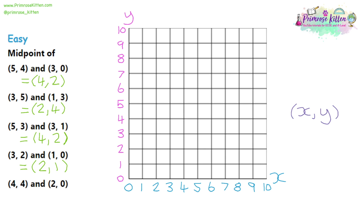For the final easy question, we've got (4, 4) — 4 across and 4 up — and (2, 0) — 2 across and 0 up. Before drawing the line, there's a method to do this without the diagram: just look at the numbers in between. We've got x-coordinates 4 and 2, so the middle is 3. For the y-coordinates we've got 4 and 0, so the middle is 2. The answer looks like (3, 2). Checking on the graph confirms it is (3, 2). This method can be important later when you're asked to find a midpoint without a diagram.